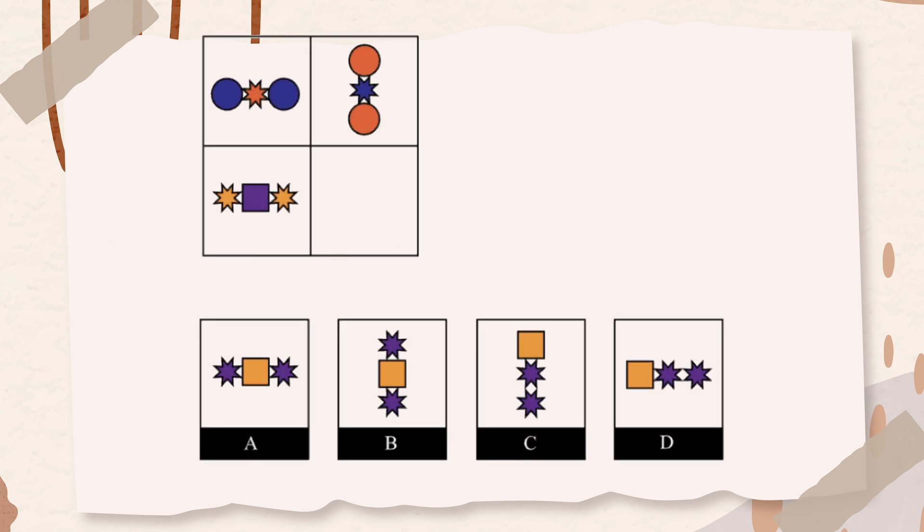The following question has three figures. The first two figures in the top row go together. The third figure in the bottom row goes with one of the answer choices. Choose the answer choice that goes with the third figure. You can pause the video to examine it carefully. In the first row, the geometric shape rotates in a clockwise direction by 90 degrees from left to right, and the shape's colors change alternately. The purple becomes orange, and the orange becomes purple. Therefore, the correct answer is option B.